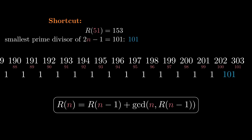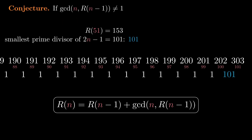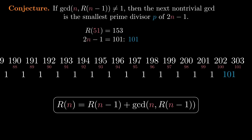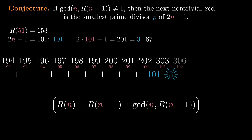This actually works in general: if we start from a GCD that isn't 1, then the next GCD that isn't 1 is the smallest prime divisor P of 2n minus 1. To take another example, if we start from the GCD 101 at index 101, then 2n minus 1 is 201, which factors as 3 times 67, so the smallest prime divisor P is 3. And indeed, the next non-trivial GCD is 3. At index 102, 2n minus 1 is 203, which factors as 7 times 29, so the next non-trivial GCD that appears is 7. This checks out too.